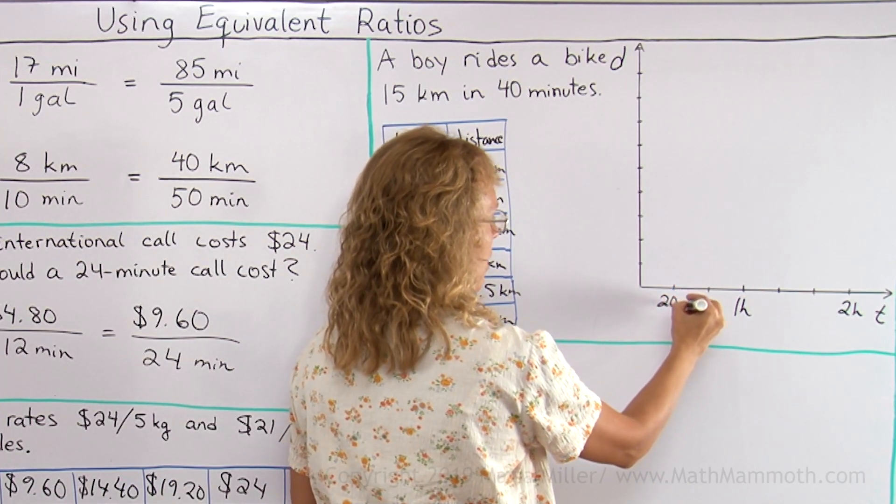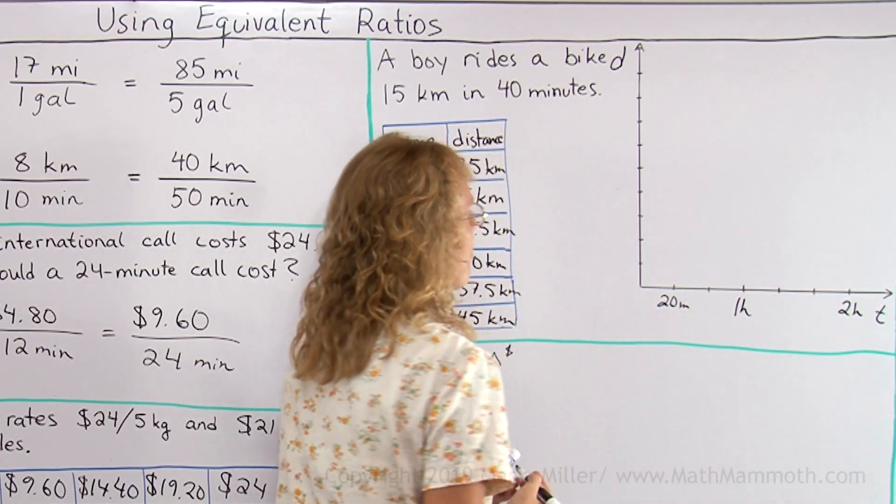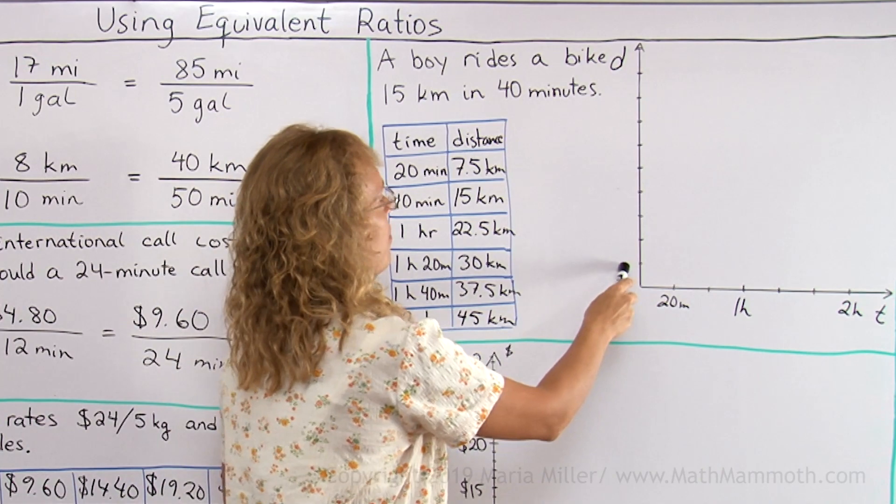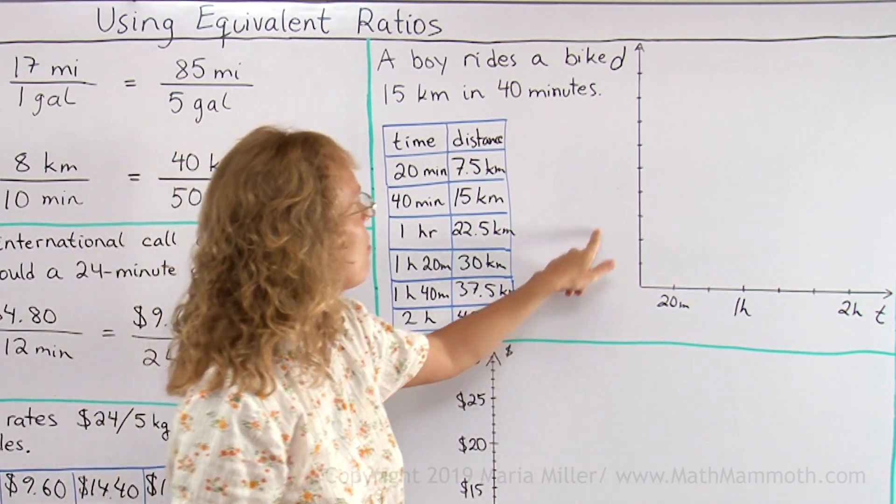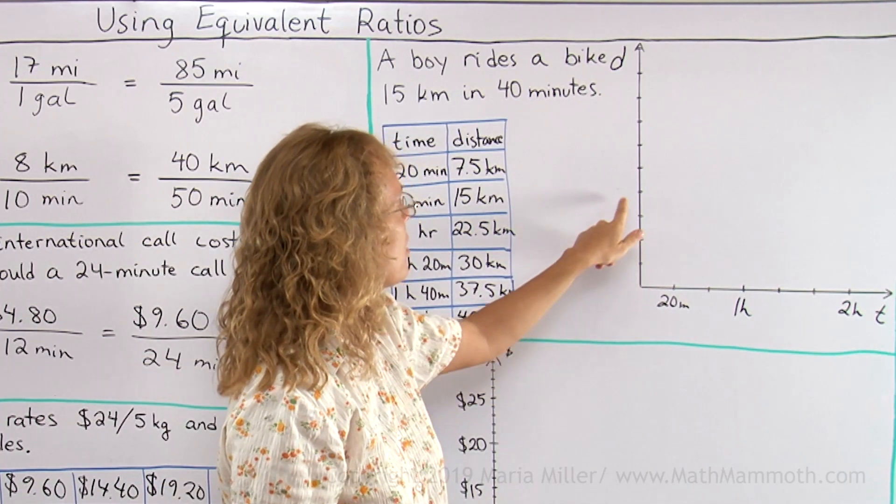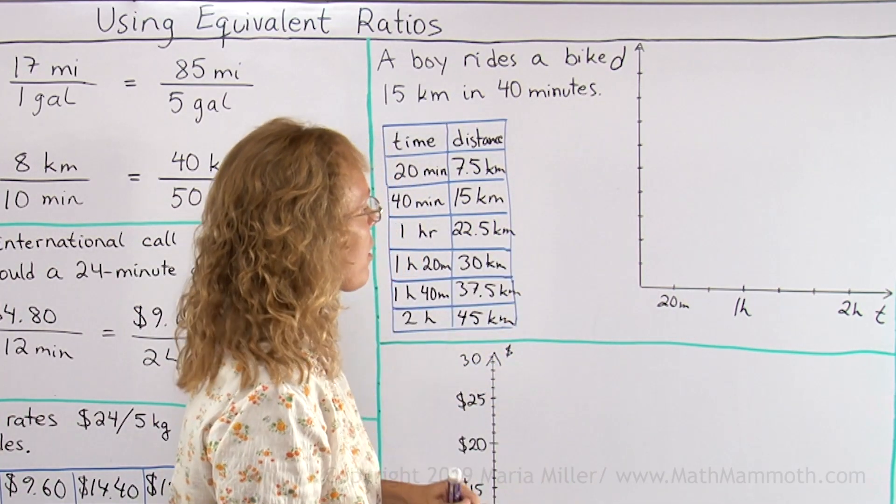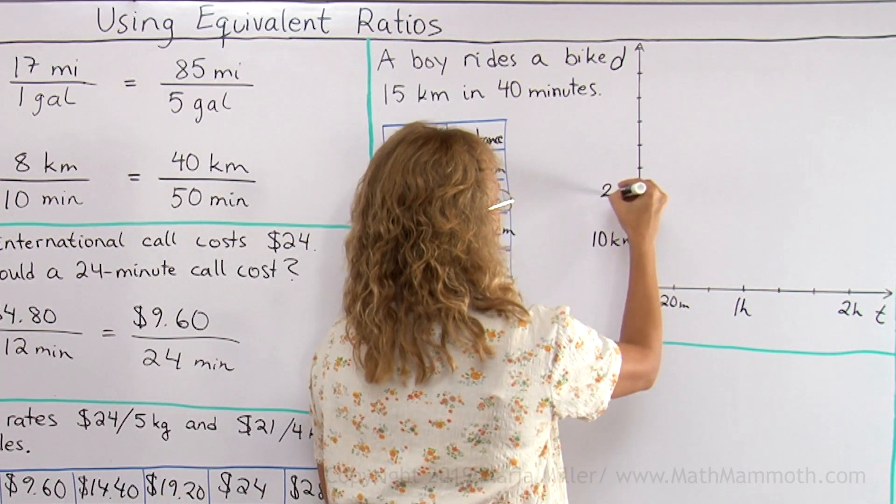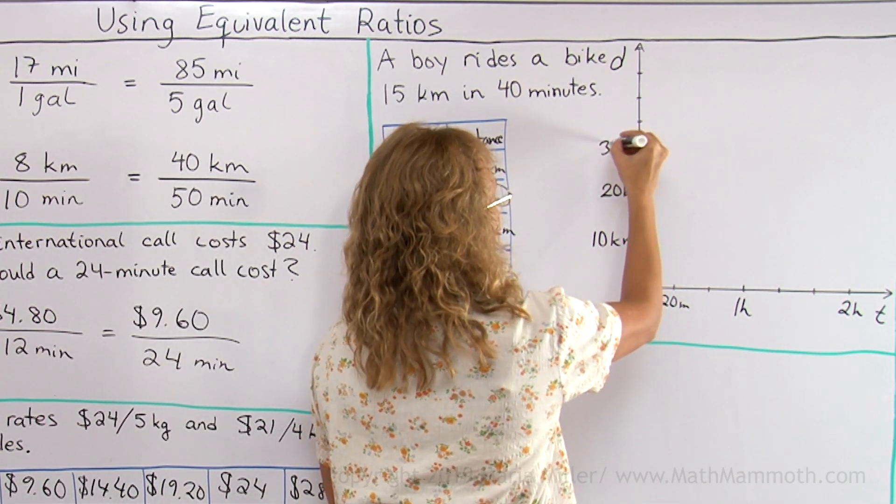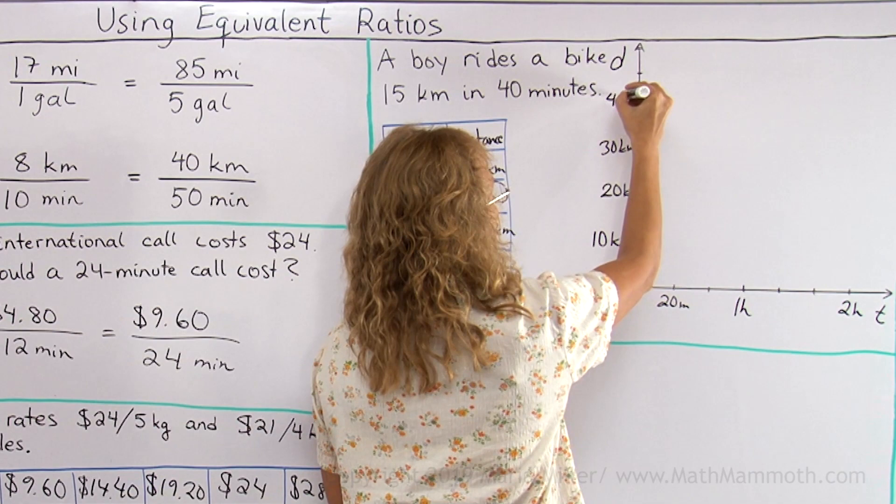And so it goes evenly here, 20 minutes, 40 minutes and so on. Over here, I need to have 45 kilometers is my highest number. So if I go 5, 10, 15, 20, 30, 40, that will work. 10 kilometers here, 20, 30 and 40.